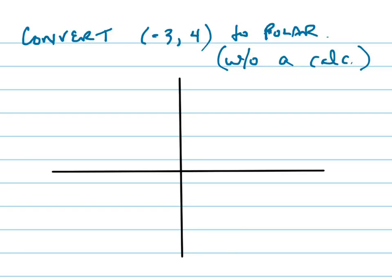We're going to convert the point (-3, 4) into a polar coordinate. It's kind of tricky because here's my point, (-3, 4).